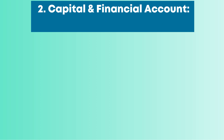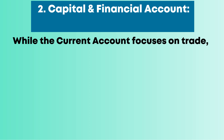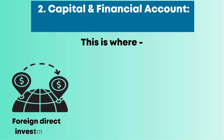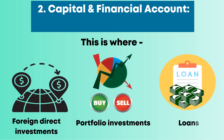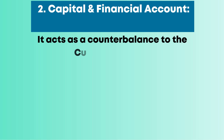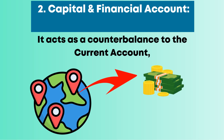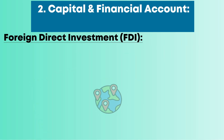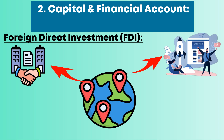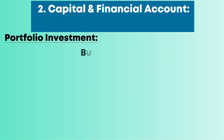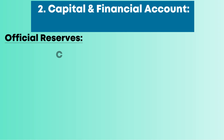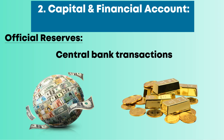Two: the capital and financial account, the investment tracker. While the current account focuses on trade, the capital and financial account monitors investments and asset transactions. This is where foreign direct investment (FDI), portfolio investments, and loans are recorded. It acts as a counterbalance to the current account, ensuring that every dollar leaving the economy has a reason. FDI occurs when companies establish businesses or acquire assets abroad. Portfolio investment involves buying foreign stocks, bonds, or other financial assets. Official reserves refer to central bank transactions involving foreign currencies and gold.